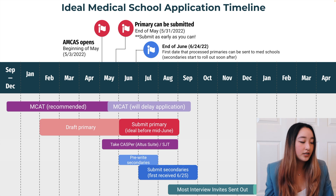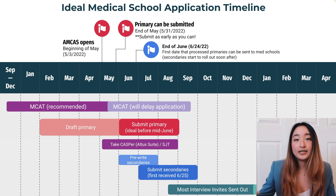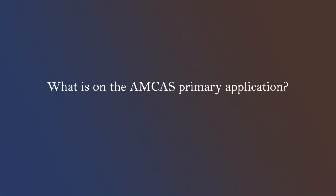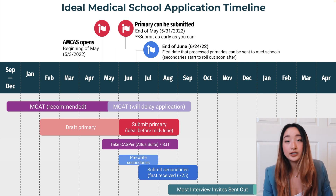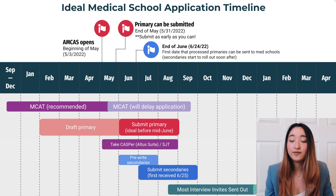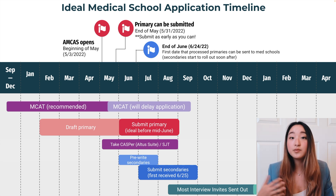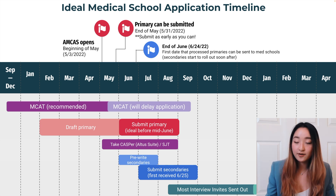At the end of June, around the 24th this year, that is the first date that processed primaries can be sent to medical schools, and therefore secondaries will roll out soon after. Your primary application includes your work and activities, biographical information, letters of recommendation (which can be sent later — you can submit your primary without them), and your personal statement, which gives you 5,300 characters to write about why you want to go to medical school. I think you should submit your primary ideally before mid-June — as early as possible without sacrificing quality. Once you feel it's polished and communicates your main reasons for pursuing medicine, it's good for submission.